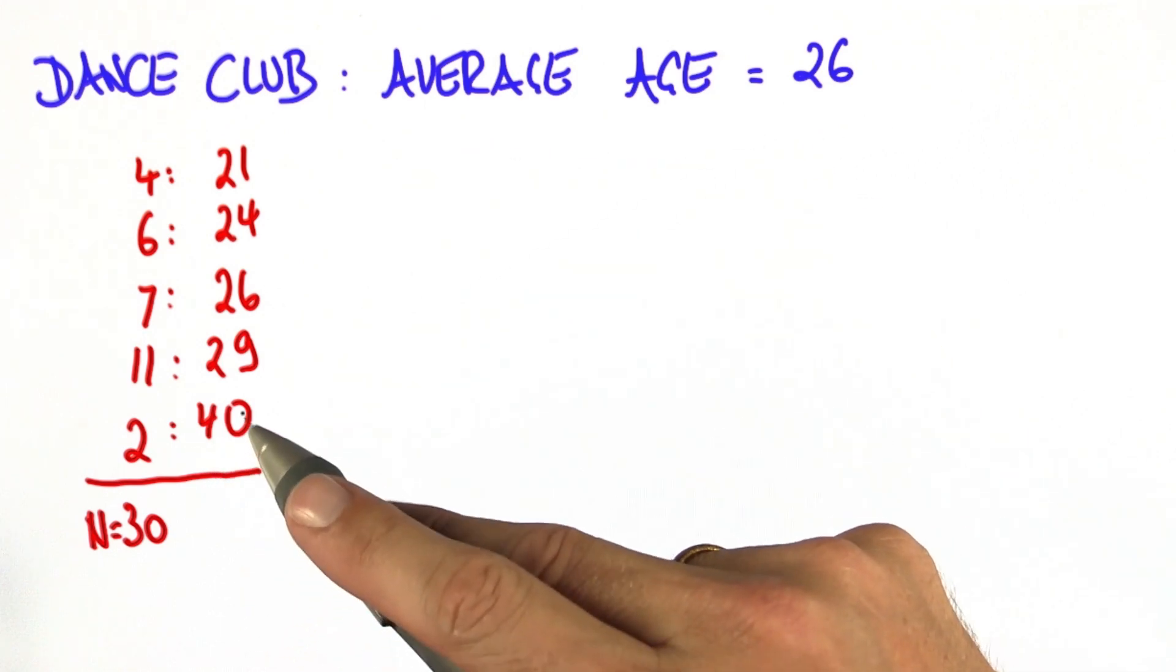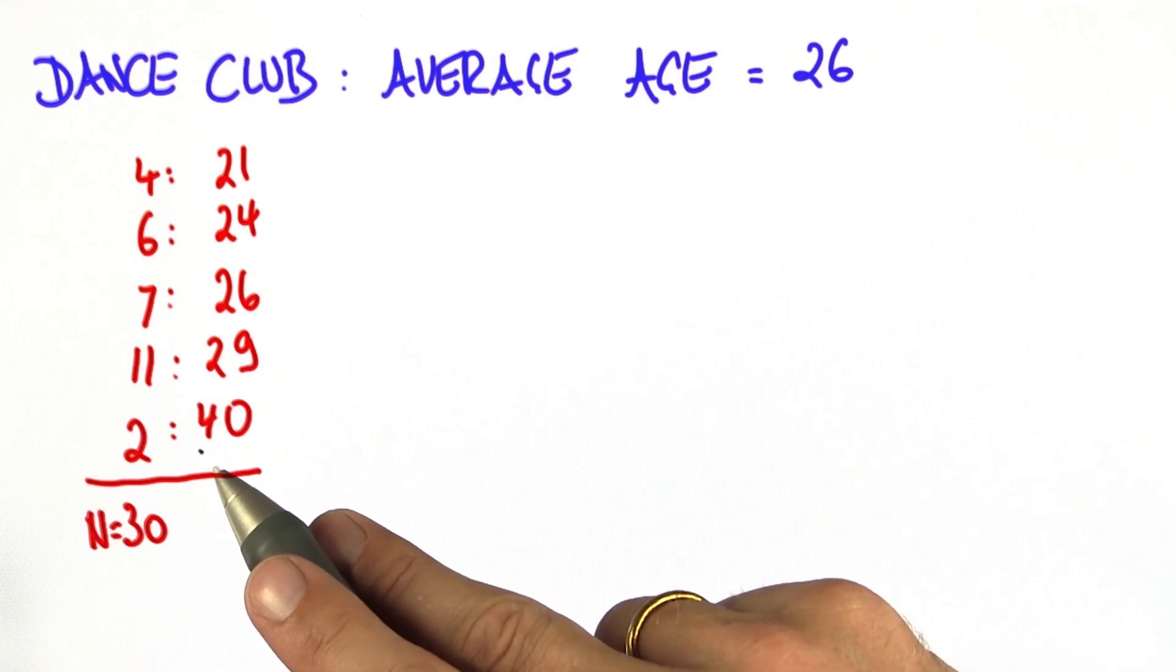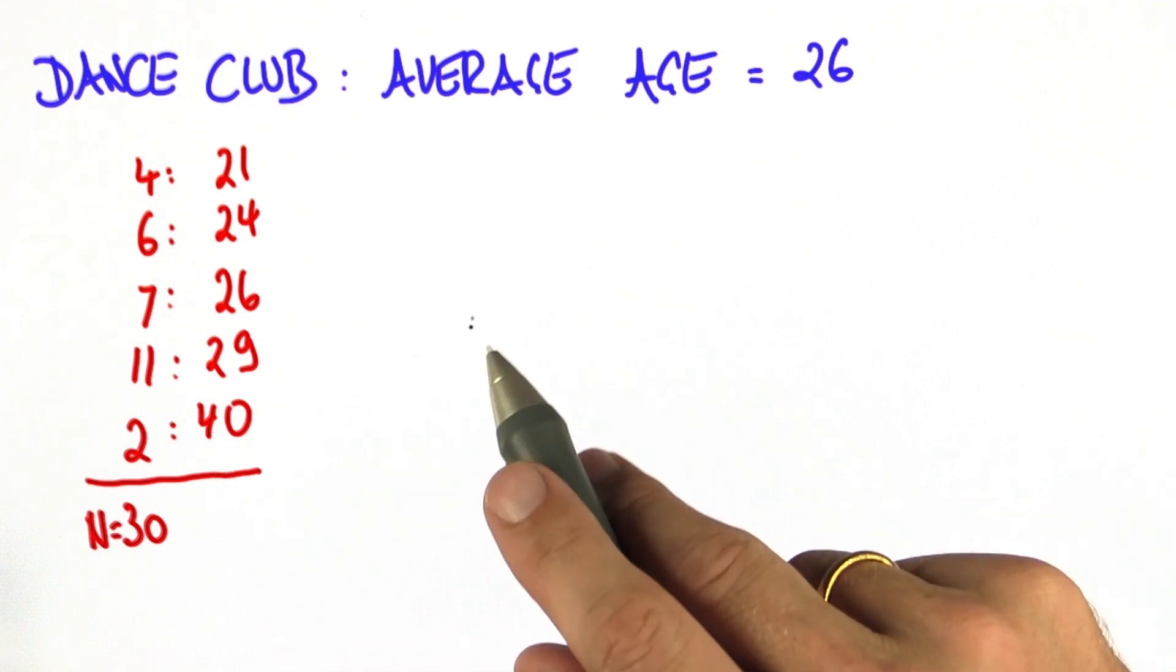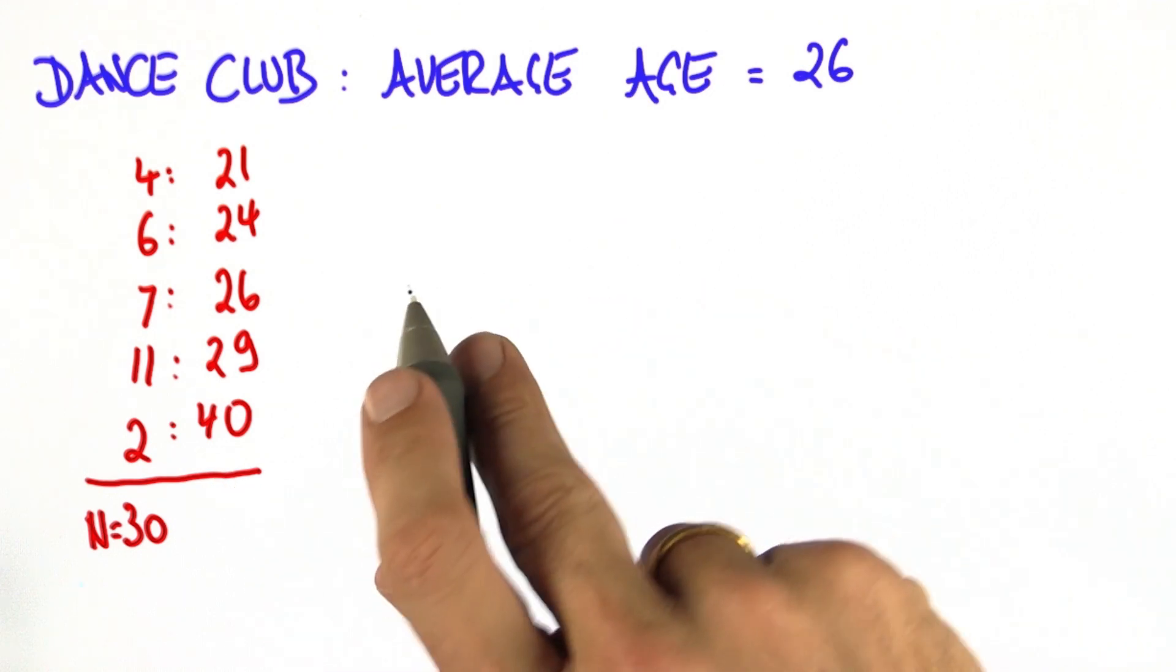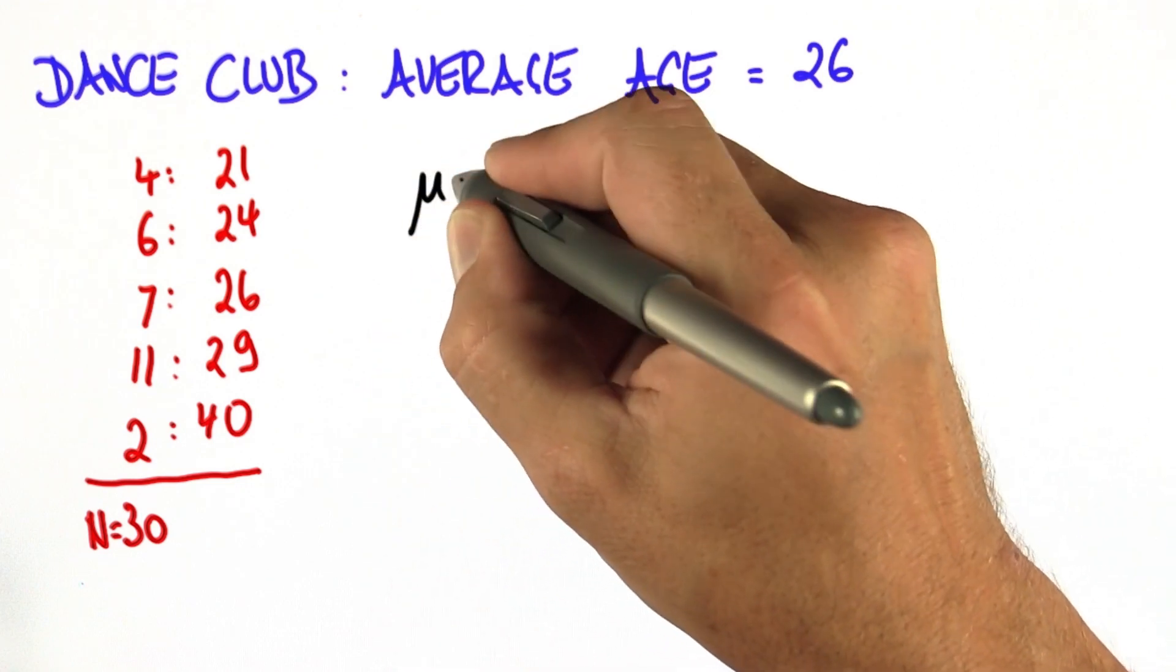Obviously, the fact that there's two 40-year-olds is a little bit disturbing. So let's do so in stages. I'm going to guide you through this. First, let's calculate the mean.